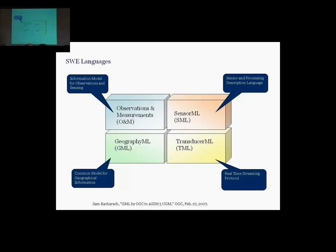So these are the basic languages. There's an observation and measurements language. This is what I explained, which is very similar to the ontology I shared earlier. This is information model for observations and sensing. The geographic GML, which is for geographical information, so you might be more interested in these types of things. Transducer ML, which is a real time streaming protocol. So it actually has an encoding for streaming data from one sensor to another within a network. And sensor ML, which describes the more hardware-related processes of sensors. So this is more related to the second ontology I shared.